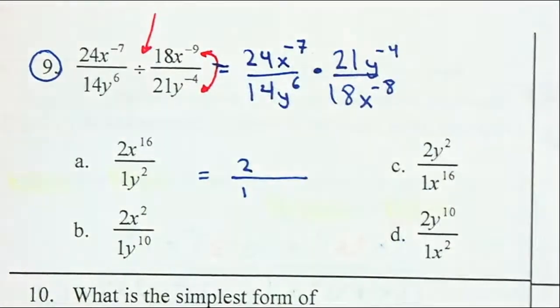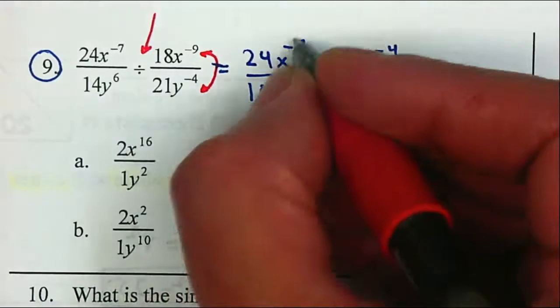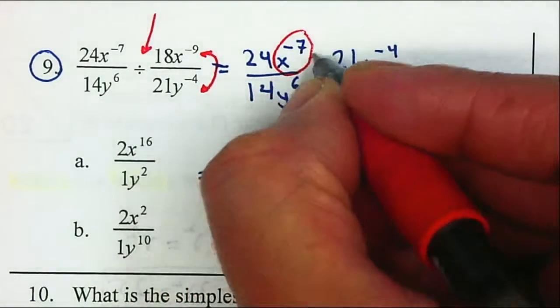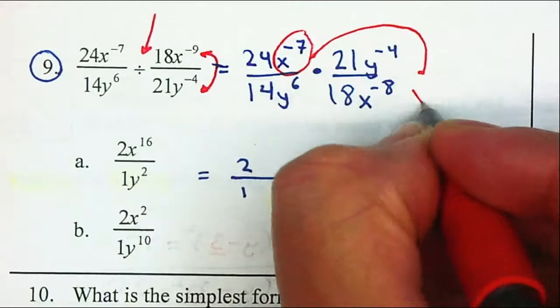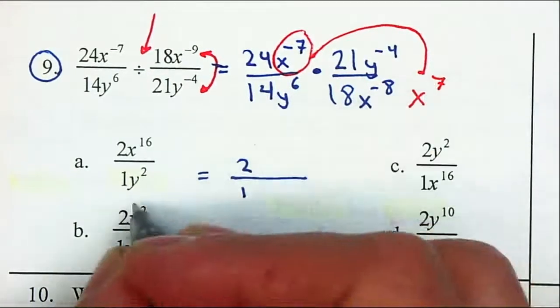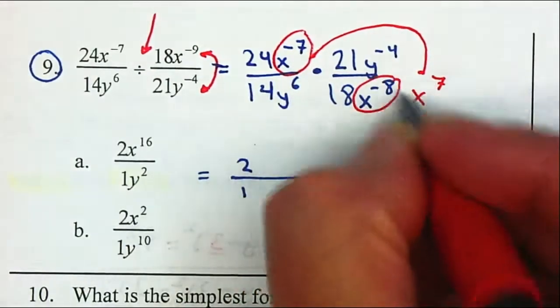I notice I have some negative exponents. So if it's negative, it gets switched to the opposite side. So it'll be x to the 7. I find another one that's negative. I'm going to move it up, x to the 8.